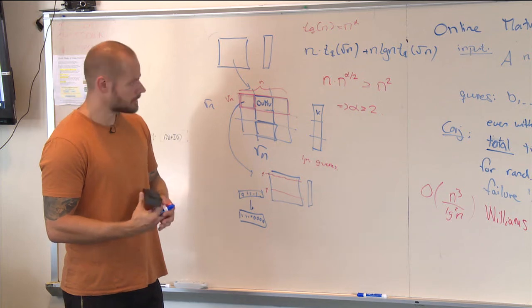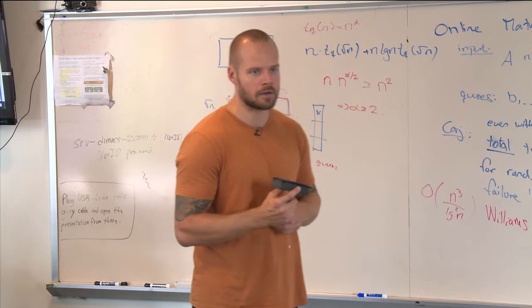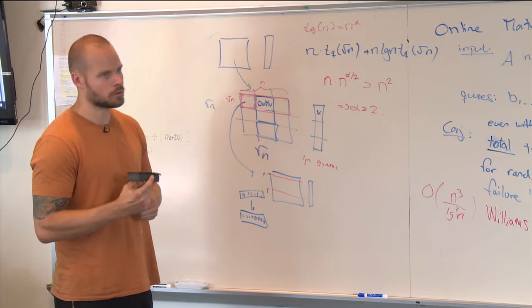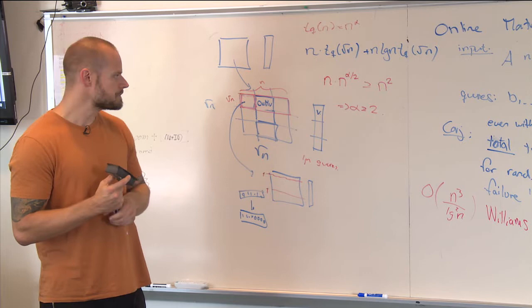What I'm going to do next is show you the best-known upper bound for this problem. Then in the last part, I'm going to show a lower bound in some kind of restricted model of data structures. And it's going to be motivated a little bit by the upper bound and the restrictions.